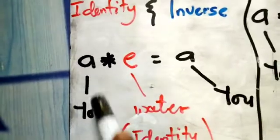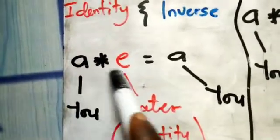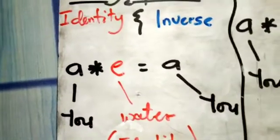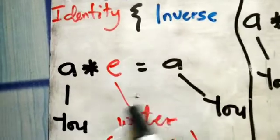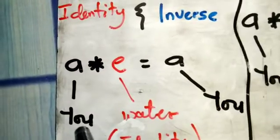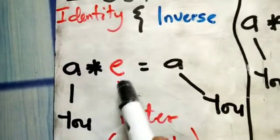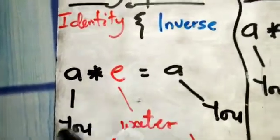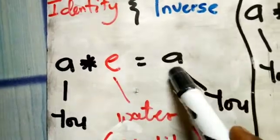Think of this as you, in your family. When you combine yourself with the identity element — we mostly use 'e' to represent the identity by default — the result is still you. So combining you with the identity gives back you.